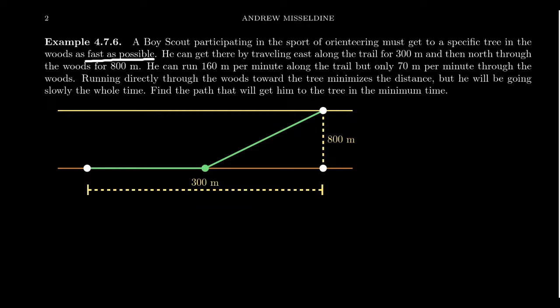You'll notice that the diagram is not drawn to scale. They never are. He can run 160 meters per minute along the trail but only 70 meters per minute through the woods because he doesn't want to run as fast. He might trip on a rock or run into a tree or something.